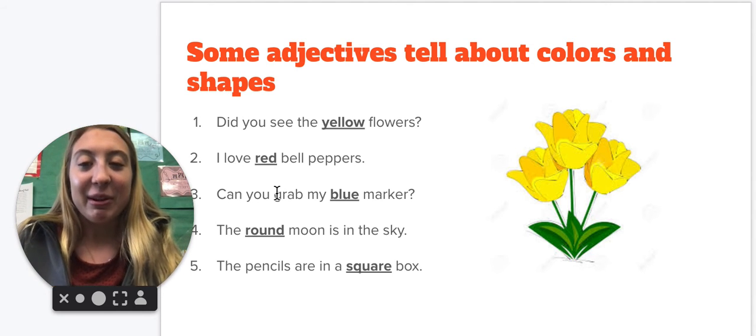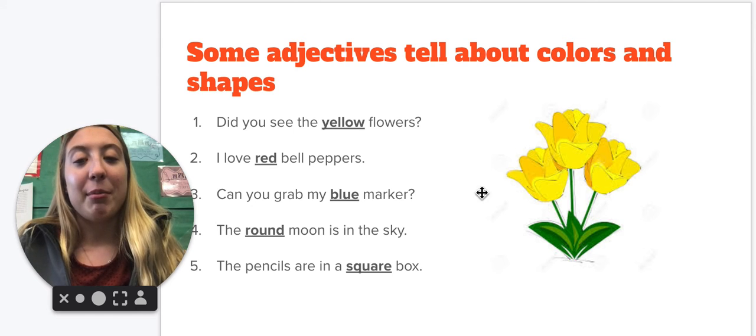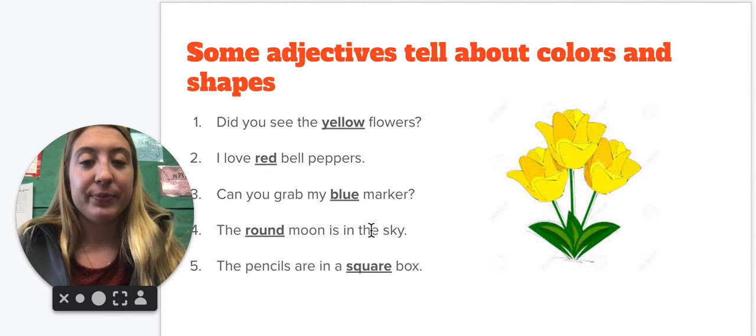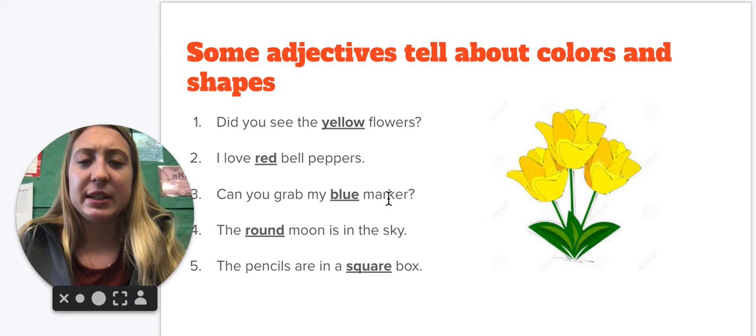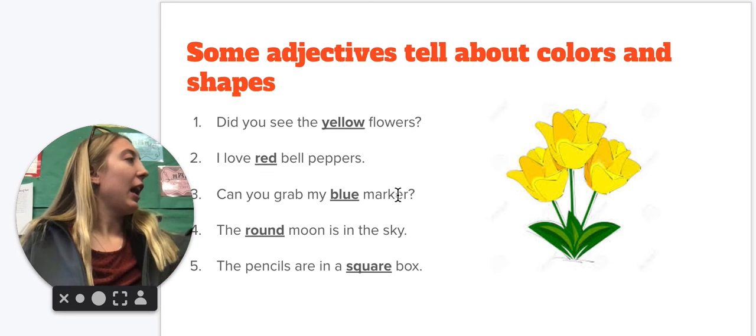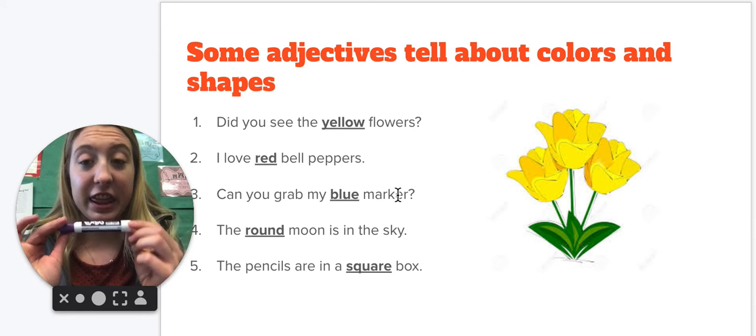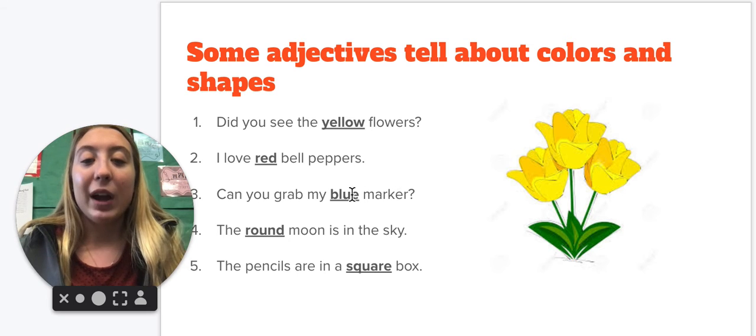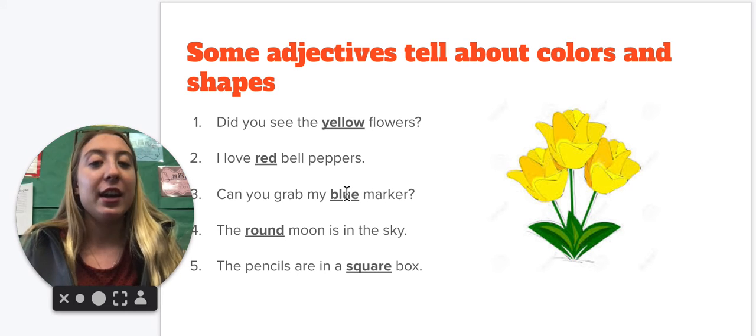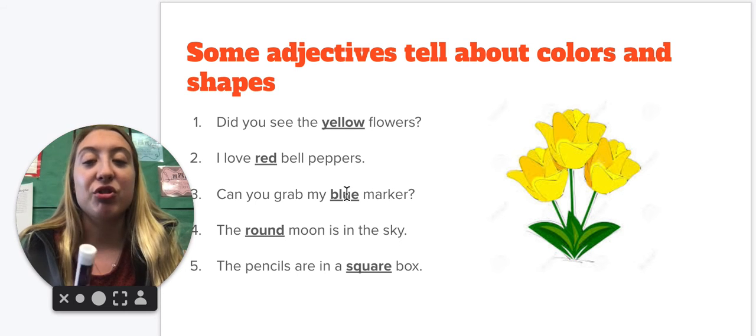So number three. Can you grab my blue marker? So if I go over here to my marker. So if I say this, it is a thing, so it is a noun. What kind of marker? It is a blue marker. It's describing the marker.